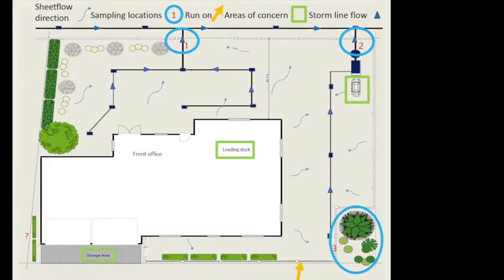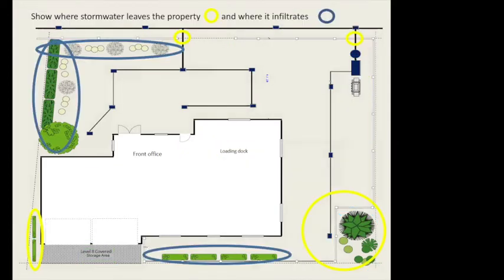Identify not only pipes and catch basins but also any sheet flow and run-on areas of concern that may have pollution sources — like the fueling station and where its outflow goes. Show where stormwater leaves your property. If it's leaving inappropriately and affecting other facilities or going into places like a wetland, you need to be aware of that — and it needs to be on your site map.